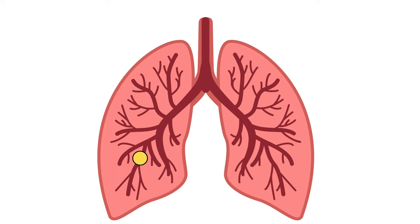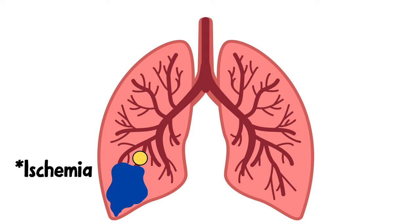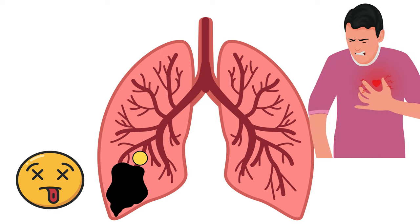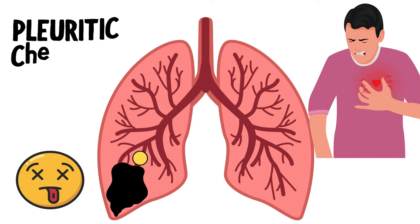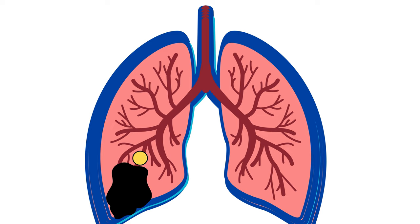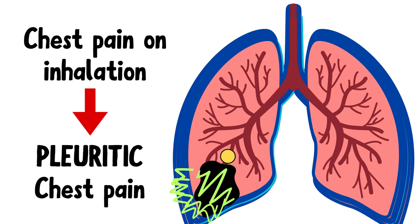Whenever the blood supply is cut off, the area supplied by that blood vessel may suffer from ischemia, or a lack of blood supply, leading to death of these cells — which we call infarction. Death is an extremely painful process, so pulmonary embolism can lead to a sharp chest pain. We call this chest pain pleuritic, which helps us differentiate it from the chest pain in a myocardial infarction. The pleura are the membranes surrounding the lungs. Wherever there's ischemia and/or infarction, there's inflammation, which can irritate the pleura. When you inhale and your lungs expand and touch the pleura, it elicits pain — this pain on inhalation is what we call pleuritic chest pain.